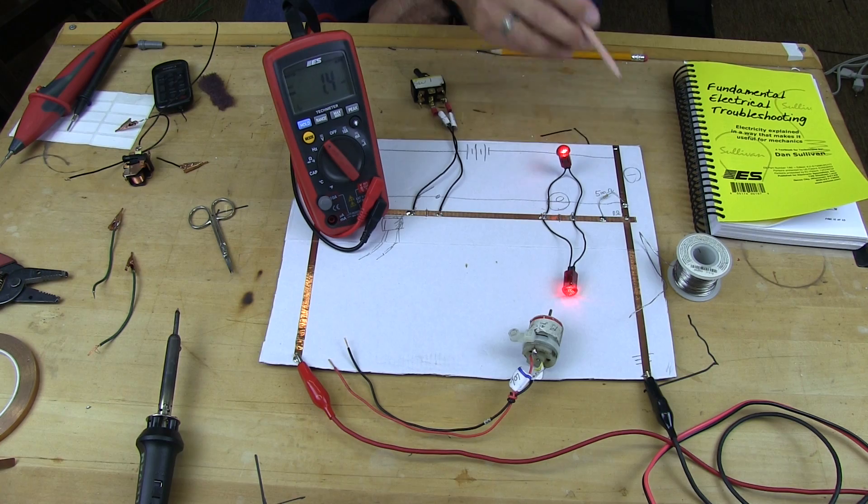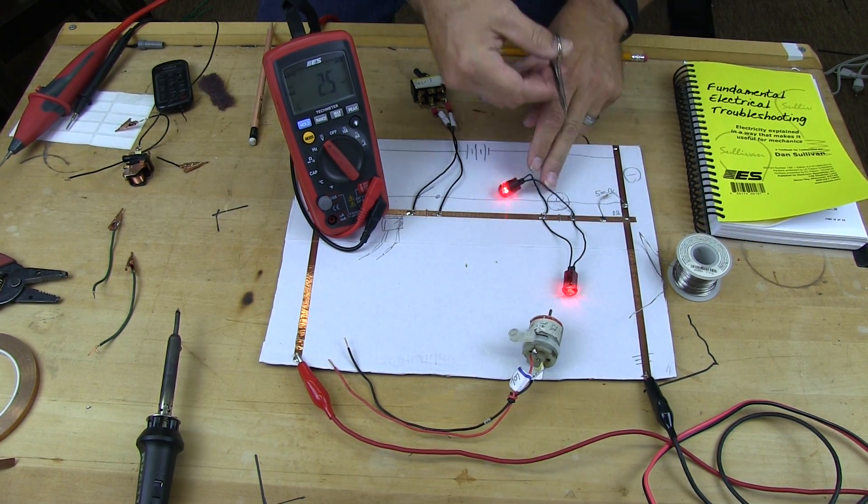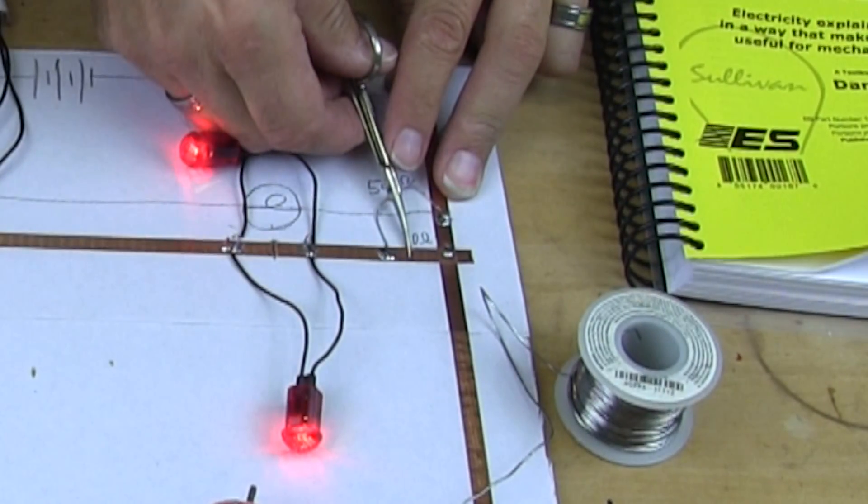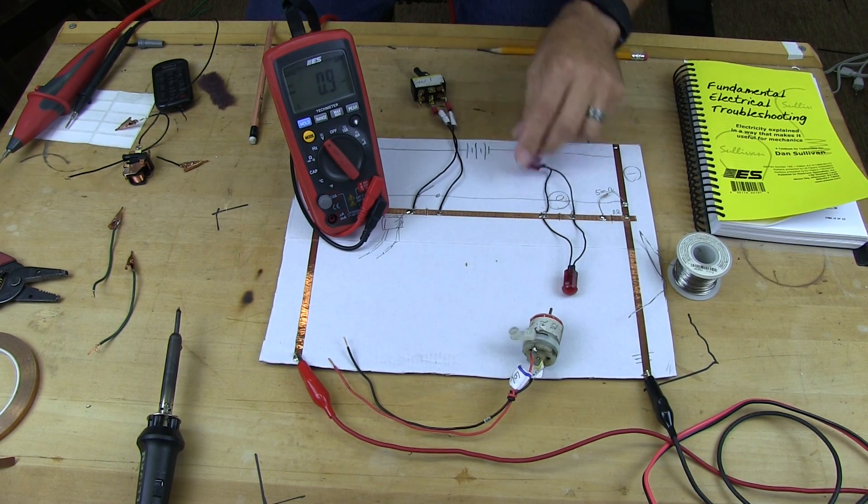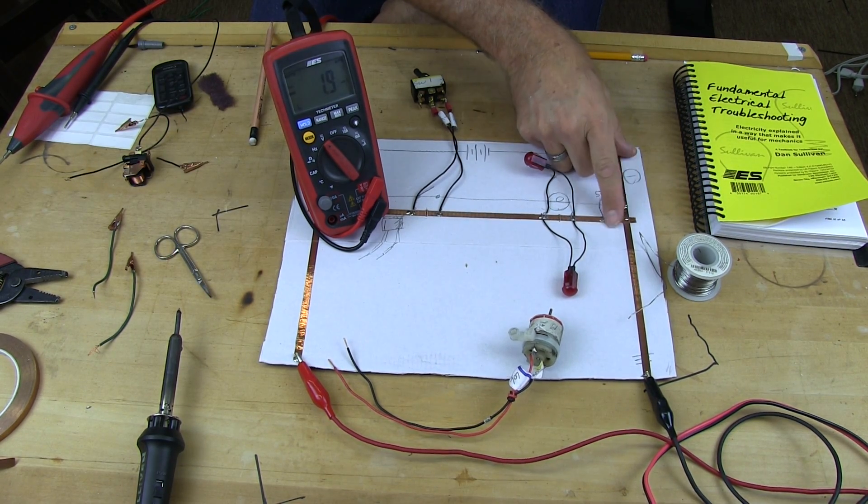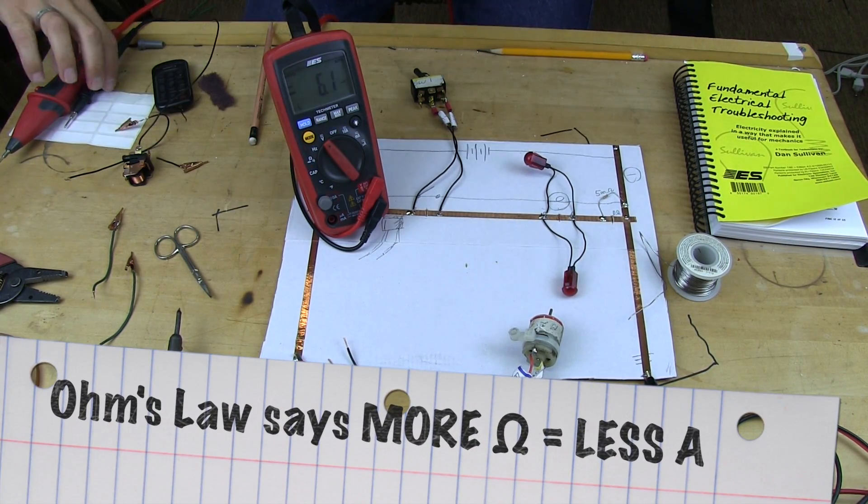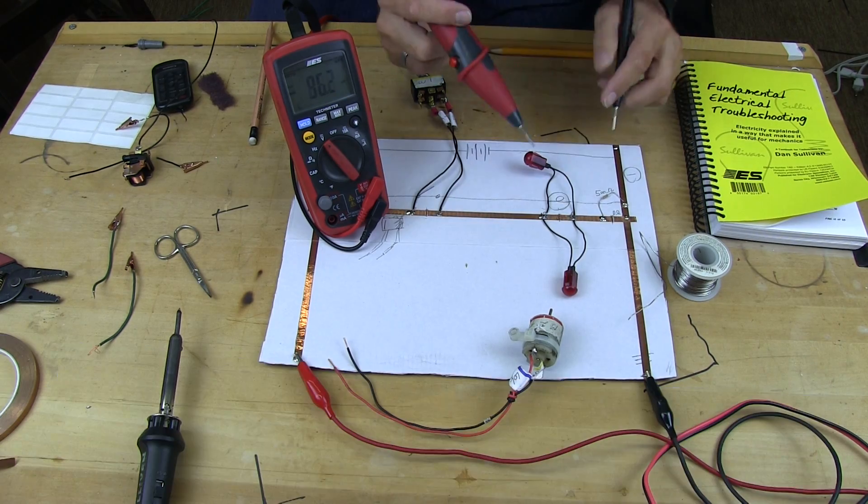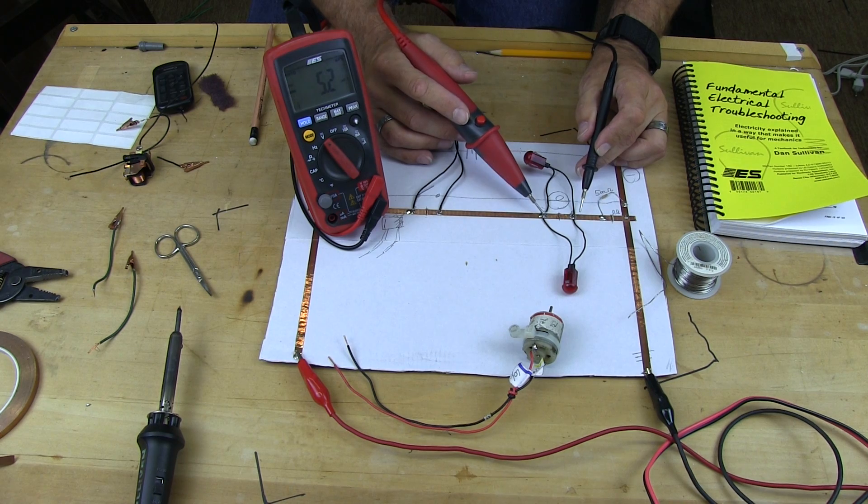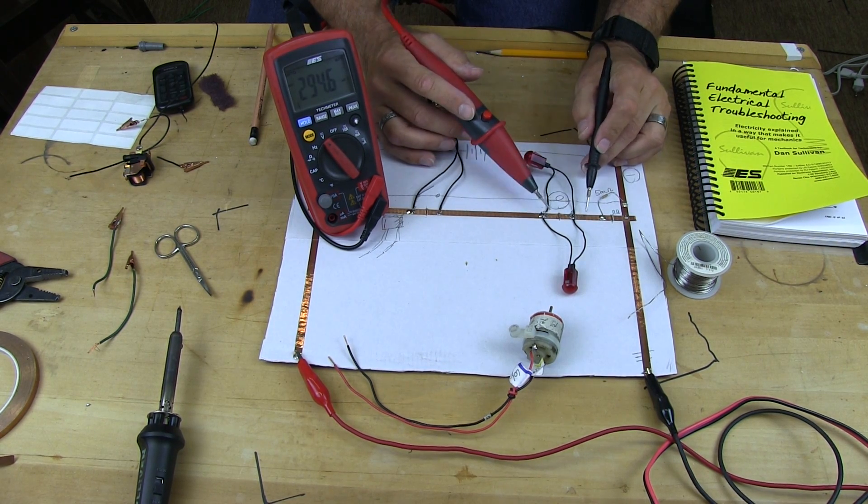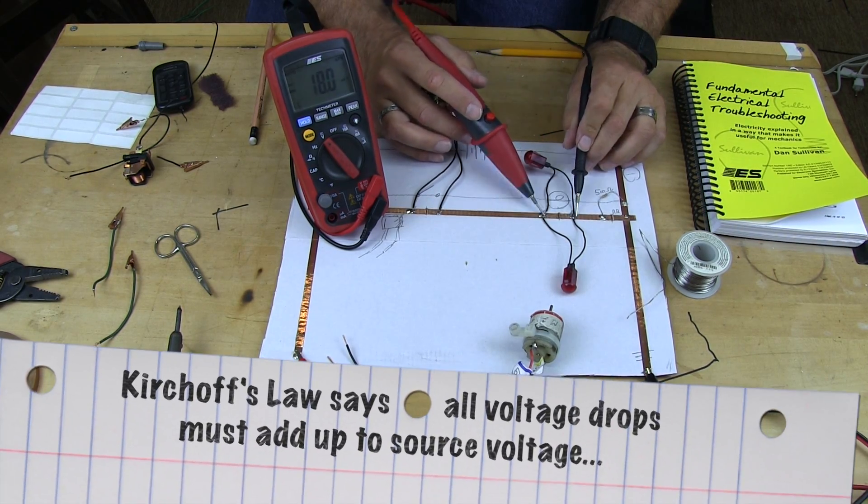But as soon as I break my ground, notice the bulbs go out. Well, why'd they go out? Because I've got a corroded ground here. But if we do the voltage drop test, it'll be interesting to see what we get because this is a series circuit now with a parallel path here. So there's a voltage drop here and there's a voltage drop here, and if you remember these two have to add up to this.